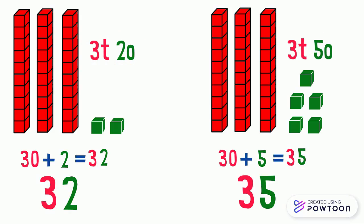In the number 32, there are 2 ones. In the number 35, there are 5 ones. 2 ones is smaller than 5 ones. So 32 is smaller than 35. Bye.